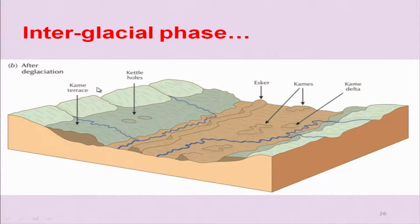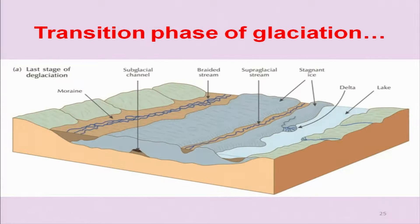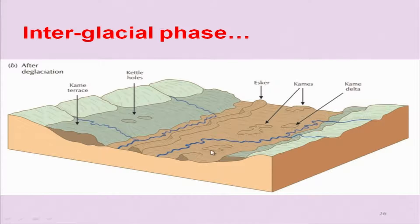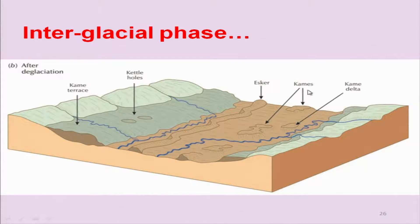Also, at the same time, in the interglacial phase, you will see the formation of eskers, kames, kettles, and kame terraces. Slightly elevated surfaces compared to surrounding regions are termed kame terraces or kame islands. What you see here are almost plateau-like features called kames, and this is after the glaciation. During interglaciation, well-developed drainages and eskers are formed, and because of erosion, the left-out areas of flat plateau-type regions are kames, kame deltas or kame terraces, and kettle holes.